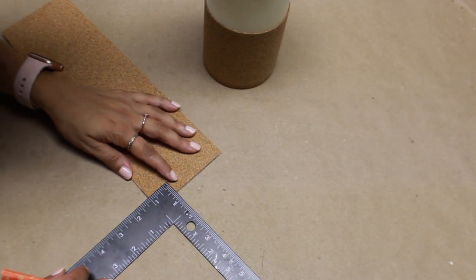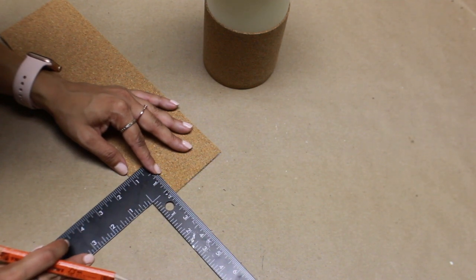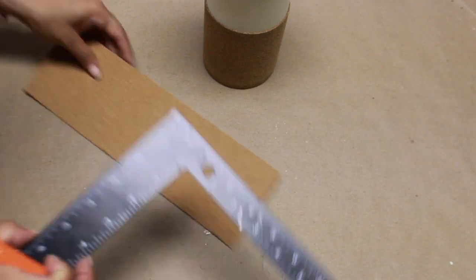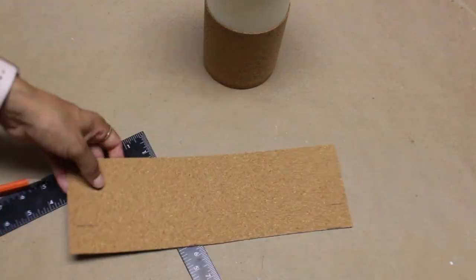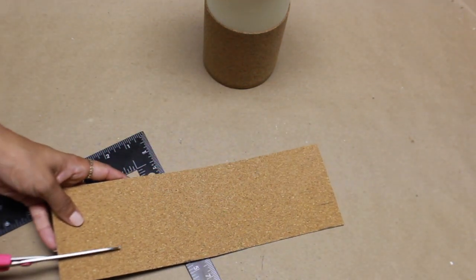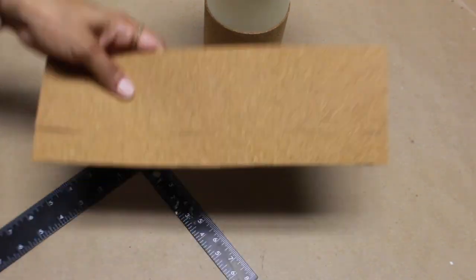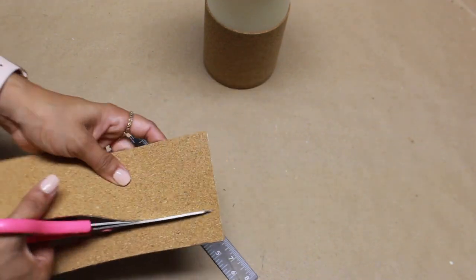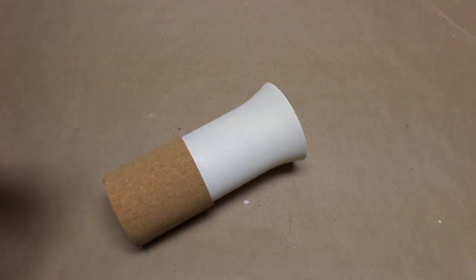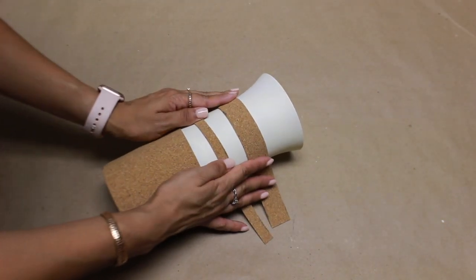I'm going to go ahead and add two more strips of this. So this next one, as you can tell, it's going to be one inch. And then the next strip I cut off is going to be about half an inch. So I'm going to go ahead and add the one inch strip at the top and then the half inch in the middle.